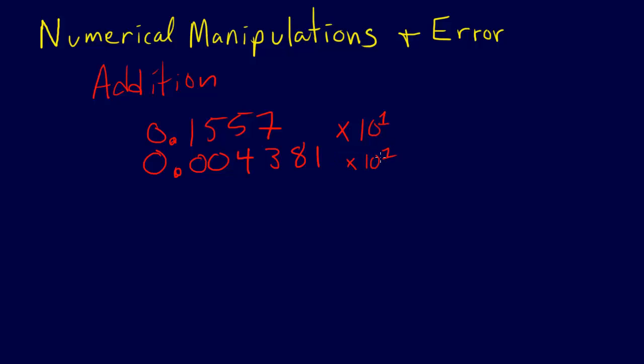You can notice here that both of these numbers have four digits of precision as represented. We're doing this in decimal, but the same principle applies. We have these four digits of precision.